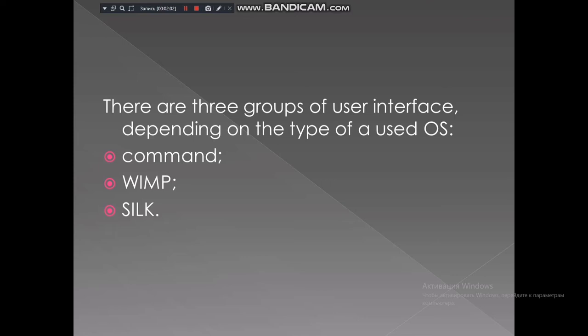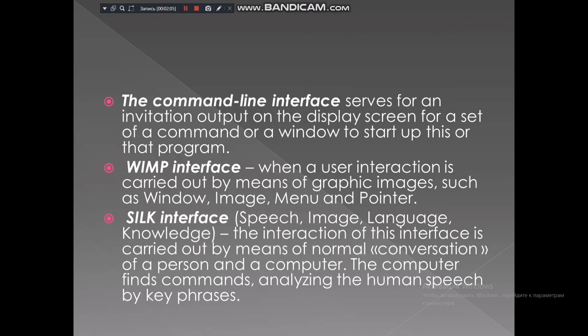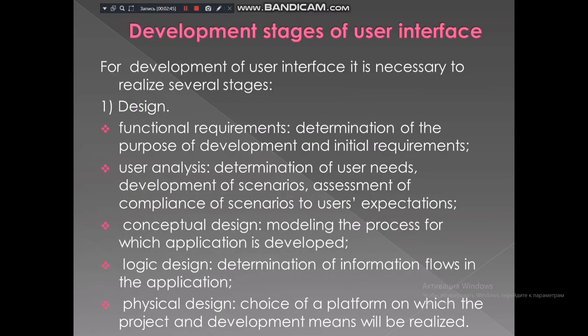The three groups are: Command, WIMP, and SILK. The command line interface serves for input and output on the display screen for a set of commands to start up a program. The WIMP interface is when user interaction is carried out by means of graphic images such as windows, images, menus, and pointers. The SILK interface interaction is carried out by means of normal conversation between a person and a computer — the computer finds commands by analyzing human speech using key phrases.